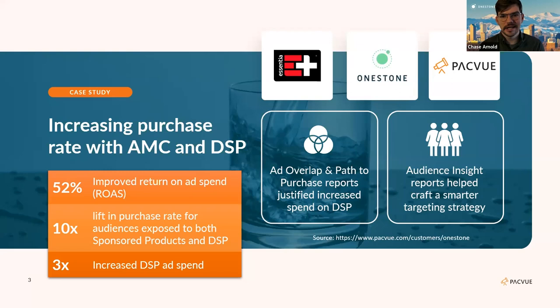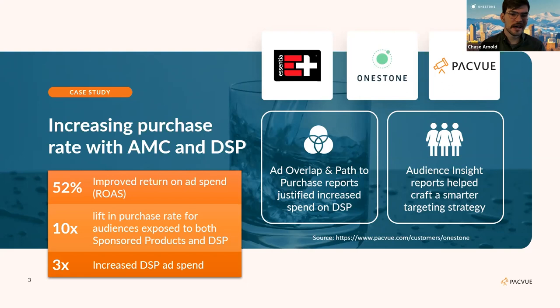AMC offers so much more than just this ad overlap report. On the right, you'll see a mention of path-to-purchase reports as well as audience insights. The path-to-purchase tool allowed us to better understand and track every shopper's journey all the way to the point of purchase. The audience insights showed us who the ideal Essentia shopper was — with data breaking out purchasers or viewers by age, income, gender, and more. Other tools we leverage include new-to-brand ASIN analysis, time-to-conversion analysis, day-parting analysis, historical branded keyword search volume, and much more.